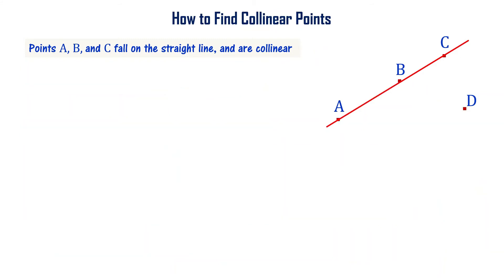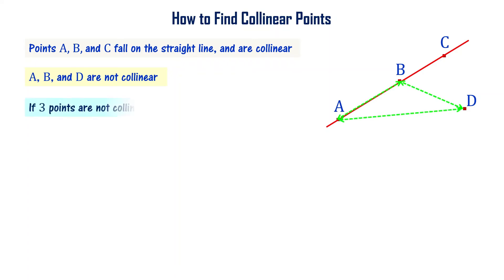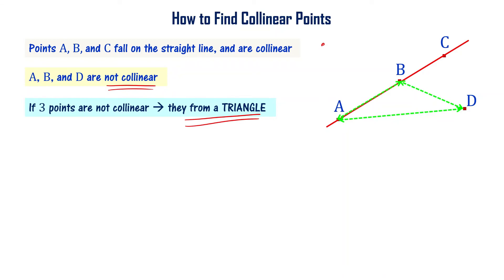There is another way to find collinear points. Look at this: A, B, C are collinear points, but A, B, D are not collinear — they are not on the same straight line. Notice that A, B, D are forming a triangle. Points that are not collinear form a triangle. If three points are not collinear, they form a triangle.